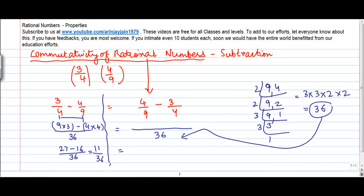Again, 9 goes into 36 four times, so 4 into 4, minus 9 into 3. This is the same thing, the only difference is the signs have changed. 16 minus 27 divided by 36 is minus 11 by 36.